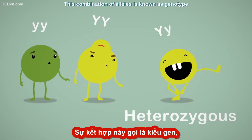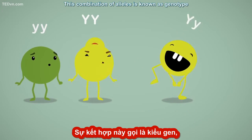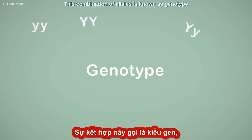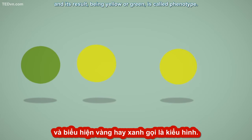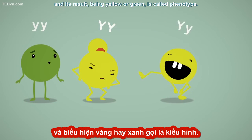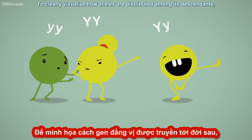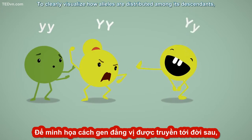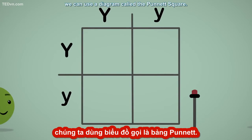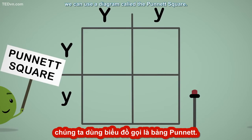This combination of alleles is known as genotype, and its result — being yellow or green — is called phenotype. To clearly visualize how alleles are distributed amongst descendants, we can use a diagram called the Punnett square. You just place the different alleles on both axes and then you figure out the possible combinations.